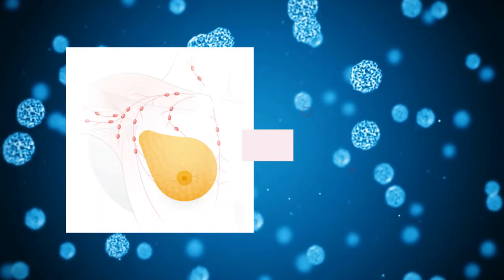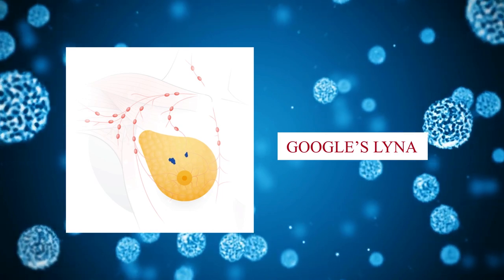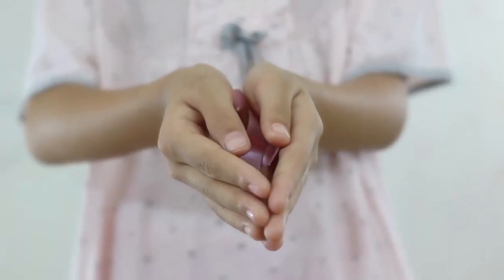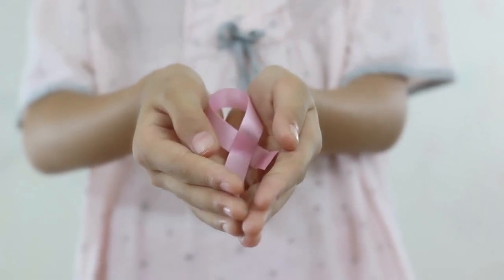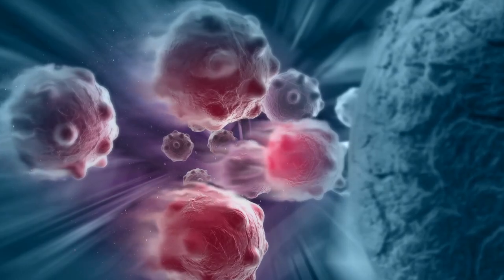For instance, AI systems like Google's LYNA (Lymph Node Assistant) have shown impressive accuracy in identifying breast cancer metastasis in lymph node specimens, even outperforming pathologists in some cases.